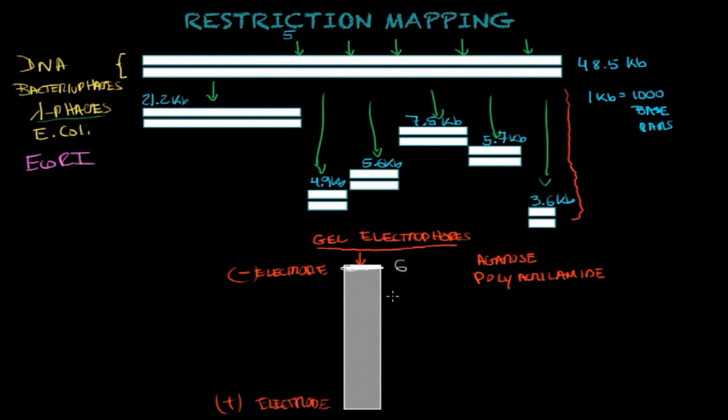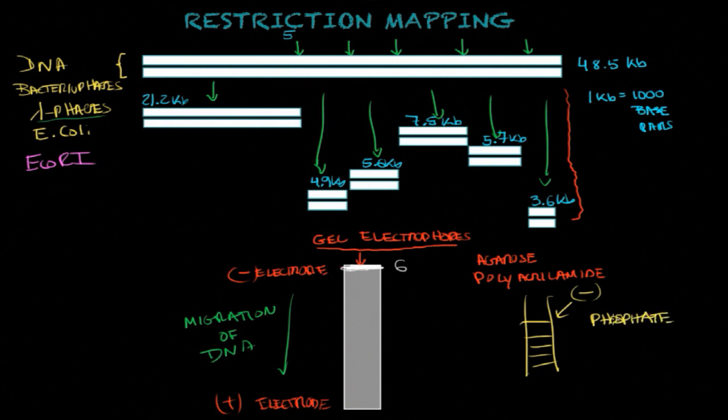What's going to happen is they're going to travel or migrate through this gel. There is going to be migration of DNA. These fragments are going to travel from the negative electrode to the positive one. Why does that happen? Because if you look at a DNA molecule, the backbone is negative because of the phosphate groups. These fragments are negatively charged, and for that reason when you create a current, they're going to migrate towards the positive side.